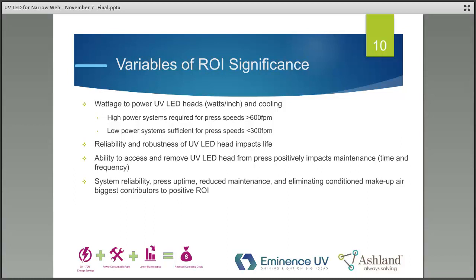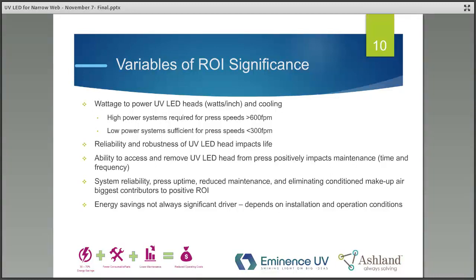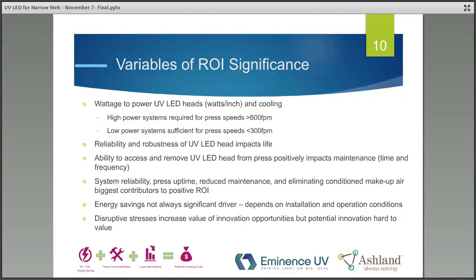Energy savings is not always a significant driver. For slower-speed applications at 100–200 feet per minute, the ROI is incredibly attractive with the right lamp. At very high-speed applications needing a lot of power, LED is generally better at energy savings than a mercury lamp, but they're much closer — especially for high-powered liquid-cooled systems. And those disruptive stress opportunities that increase innovation value are very hard to put a value on in an ROI because we're not using them yet.